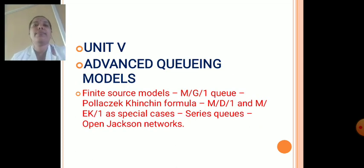After that, in Unit 5, we are going to learn about Advanced Queueing Models. In Advanced Queueing Models, the sub-topics were Finite Source Models, M/G/1/Q, then Pollaczek-Khinchin Formula, M/D/1 and M/Ek/1, and Special Cases. After this queue series, at last open Jackson Networks. So, this is the syllabus as we are going to learn for the next four months.